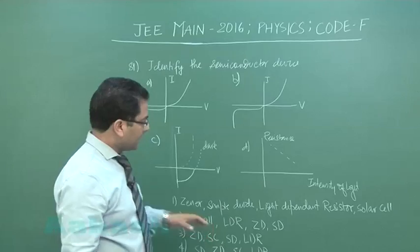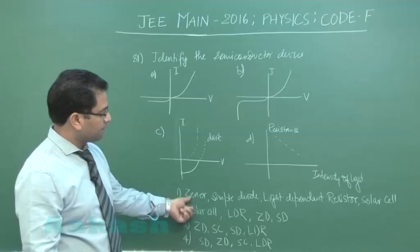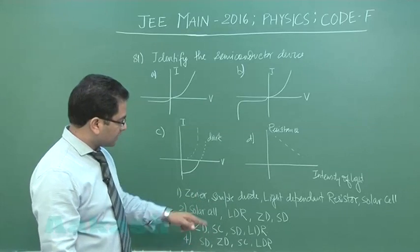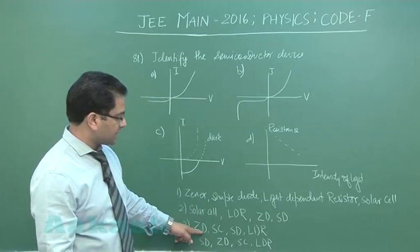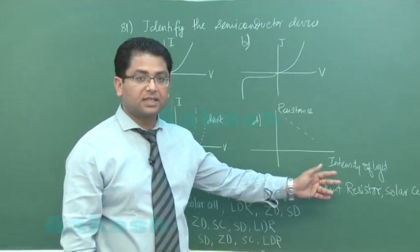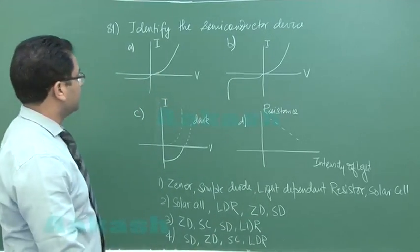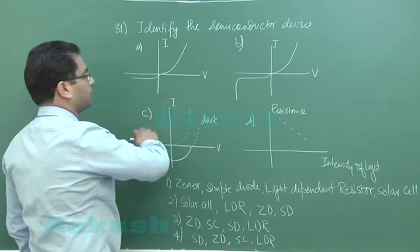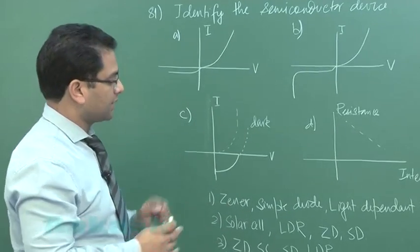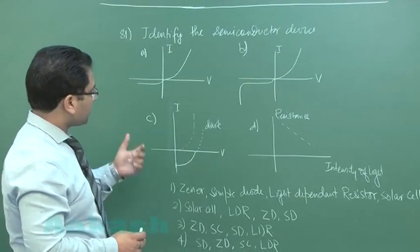These are the graphs: I-V, I-V, I-V, and resistance versus intensity. We need to identify which devices these graphs represent. The options are Zener diode, simple diode, light dependent resistor, and solar cell. This one is a simple diode showing forward bias and reverse bias conditions, and this eventually finishes everything because the first option is simple diode.